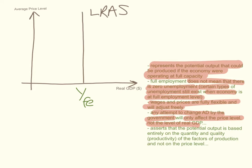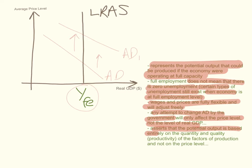For example, if this is the aggregate demand curve here, AD, and the government tries to increase aggregate demand and it rises to AD1, because the economy in the long run is at full employment, this will not affect the real output — it will only cause the average price level to rise. They assert that the potential output is based entirely on the quantity, quality, and hence the productivity of the factors of production, and not on the price level.